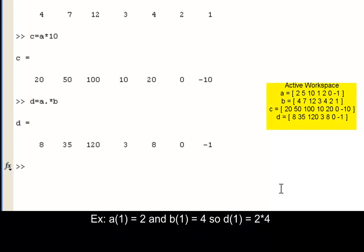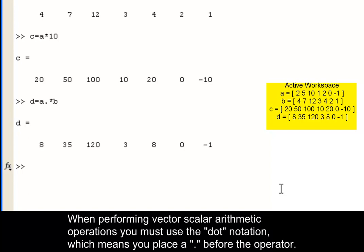This example shows the first element in vector A multiplied by the first element in vector B to yield the first element in vector D. When performing vector scalar arithmetic operations, you must use the dot notation, which means you place a period before the operator.